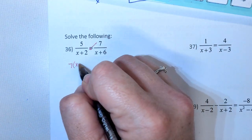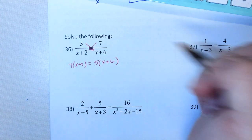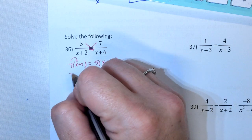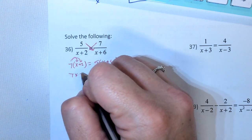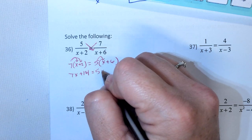So 7x plus 2 equals 5x plus 6. So 7x plus 14 equals 5x plus 30.